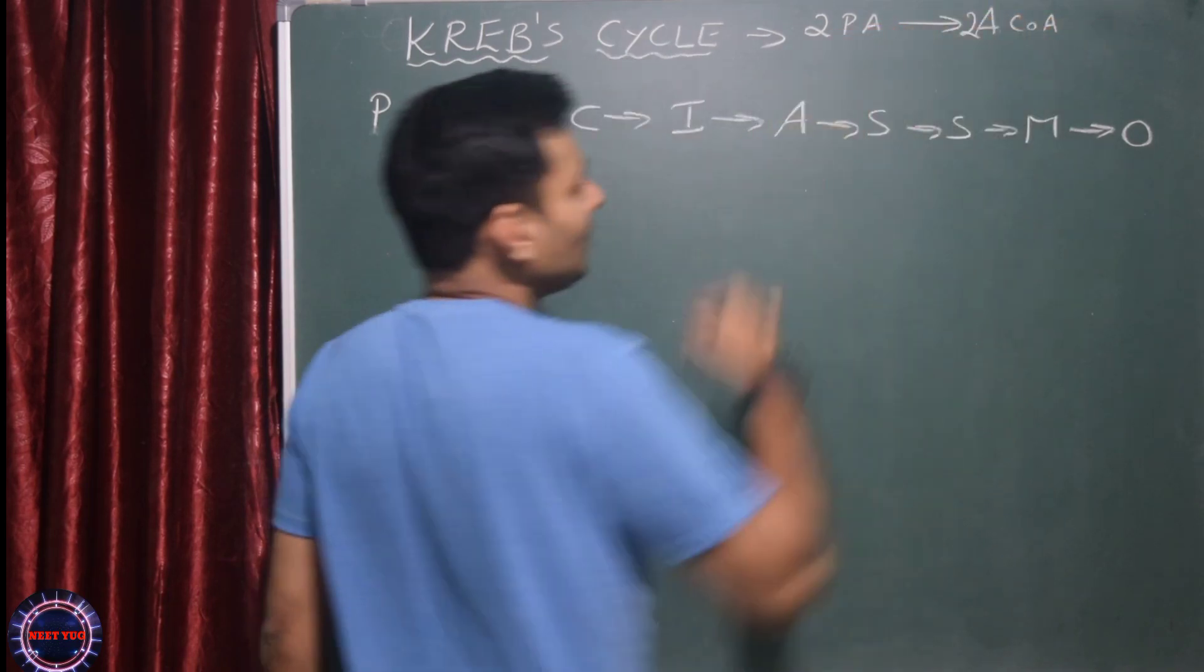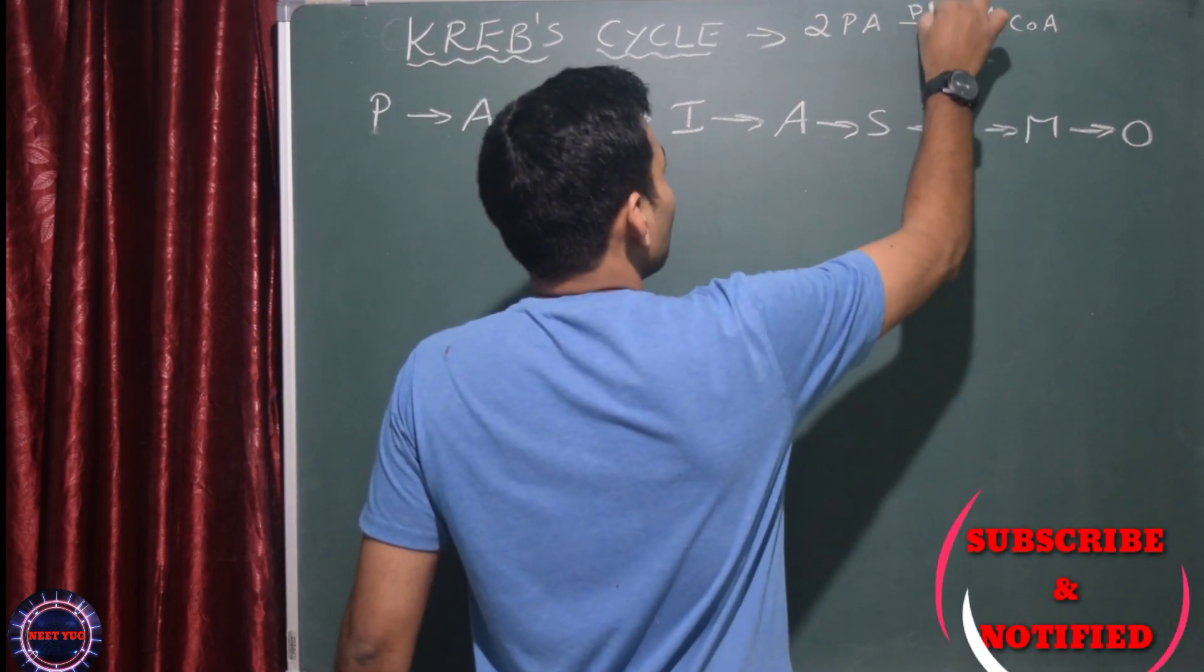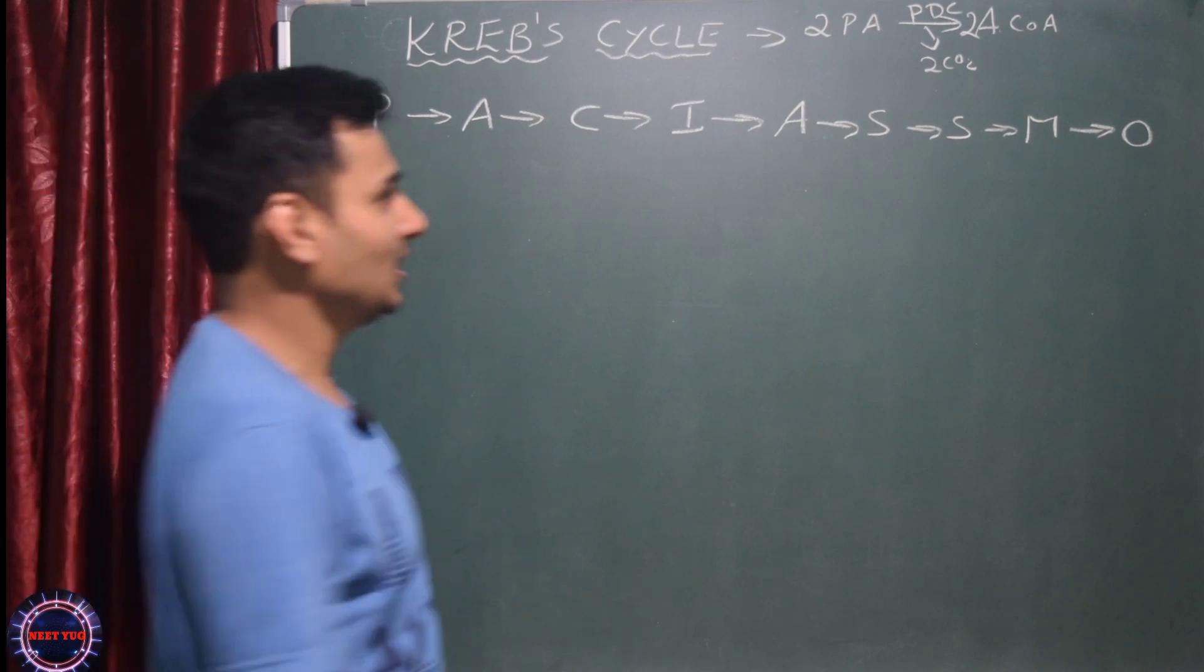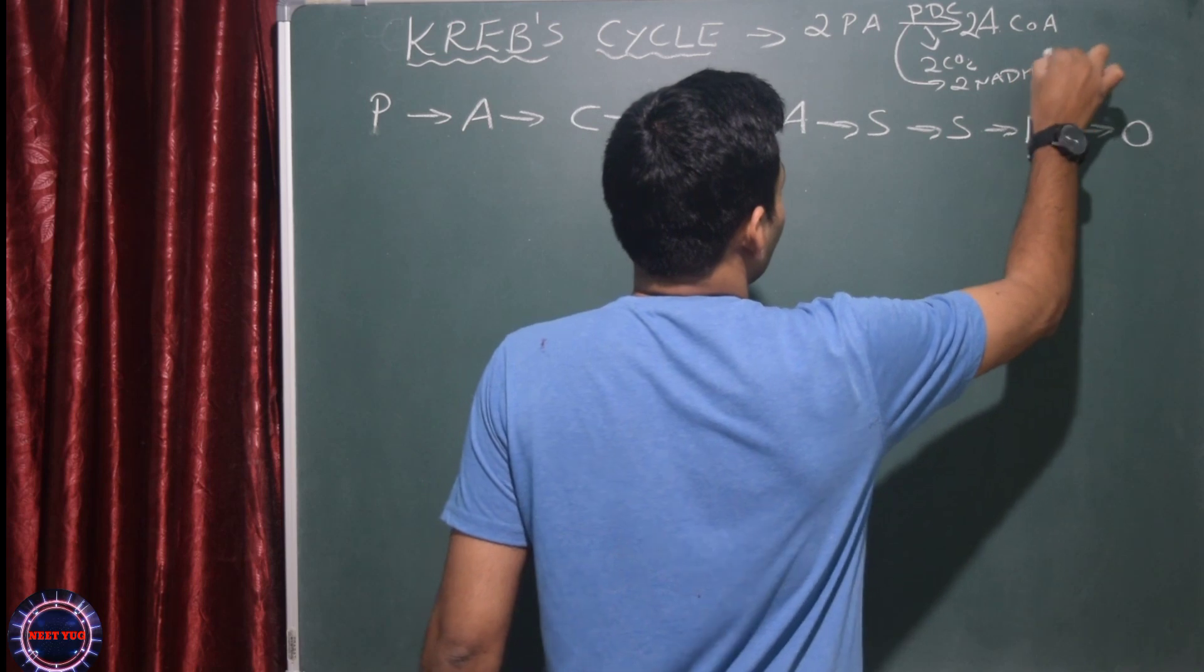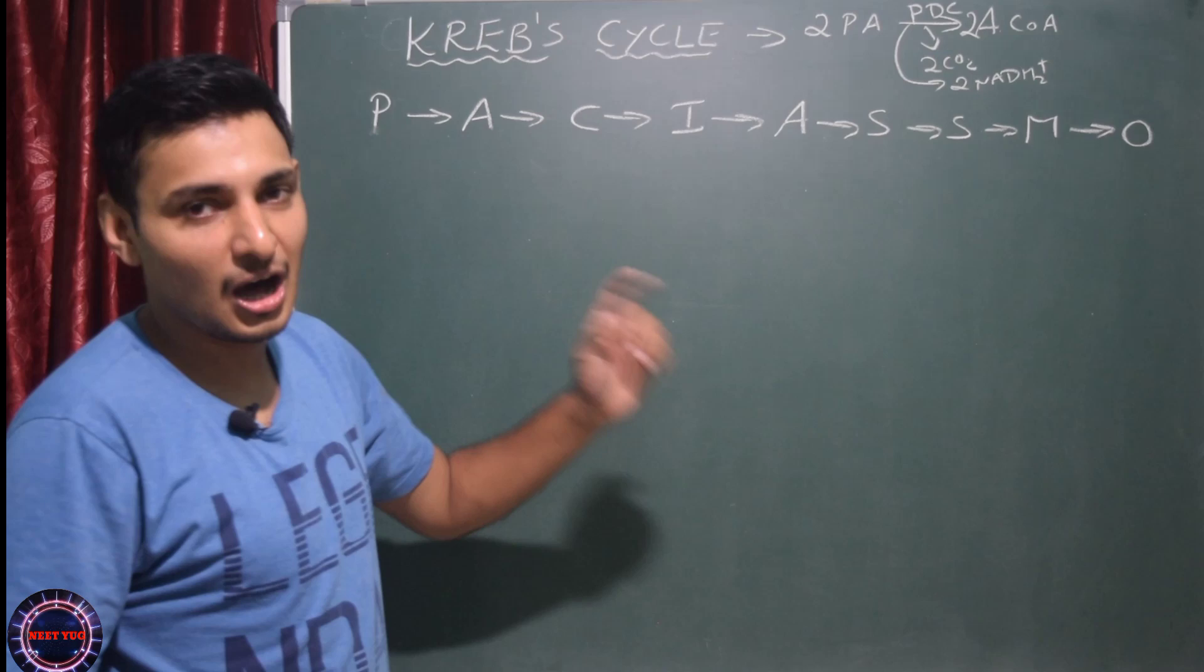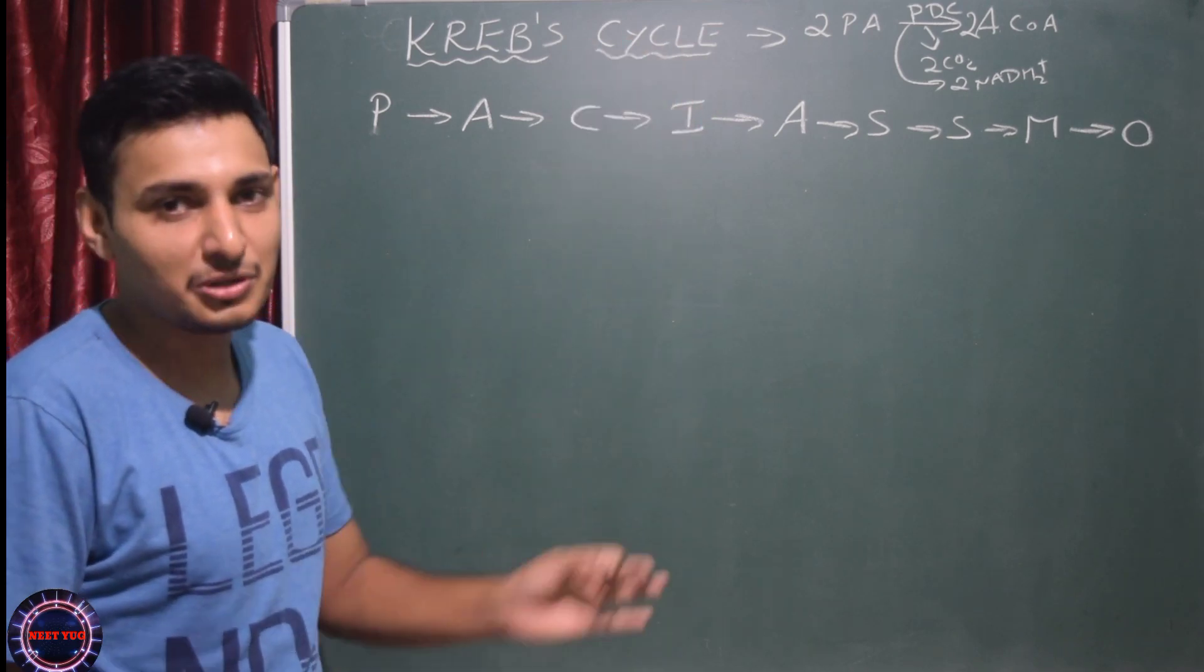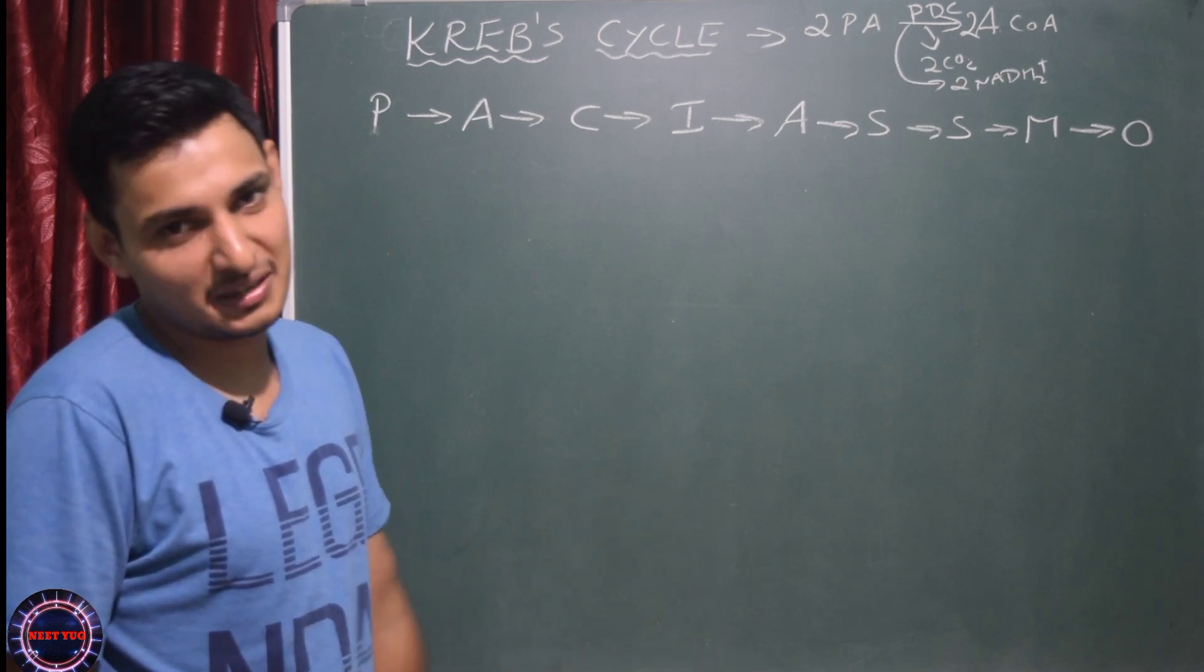Two pyruvic acids. When they're loaded there, one carbon dioxide is thrown out. There's an enzyme - pyruvate decarboxylase. That enzyme releases 2 carbon dioxide - one from each pyruvic acid. Then you get two acetyl coenzyme A. Energy is also released as two NADH2.